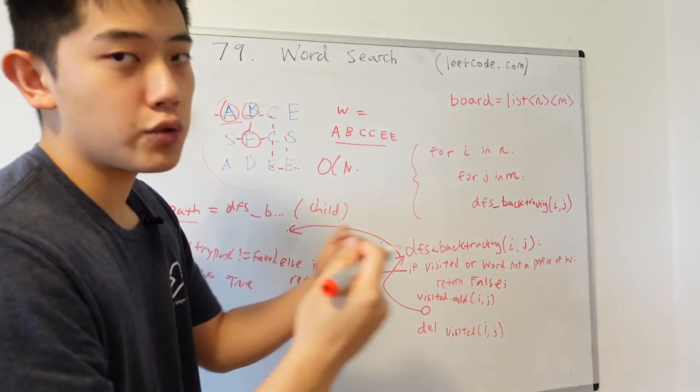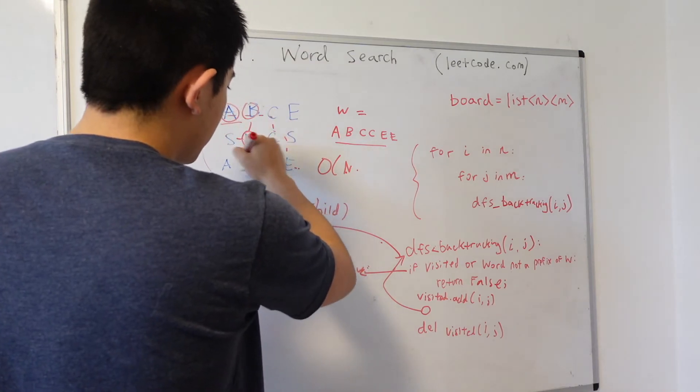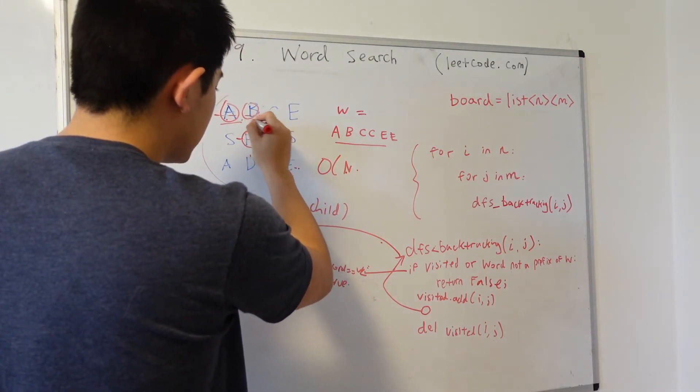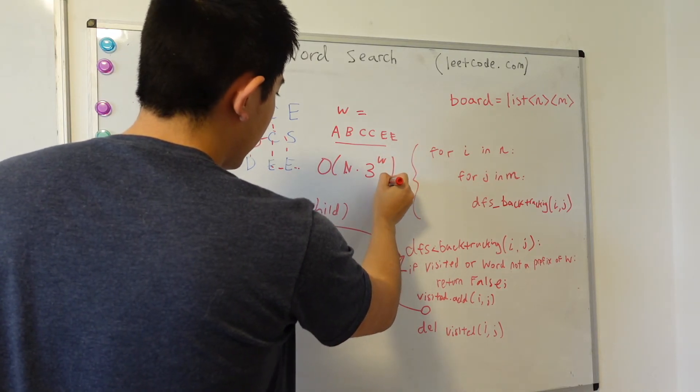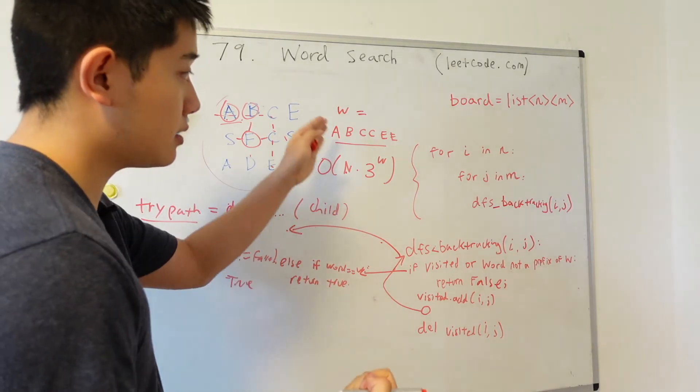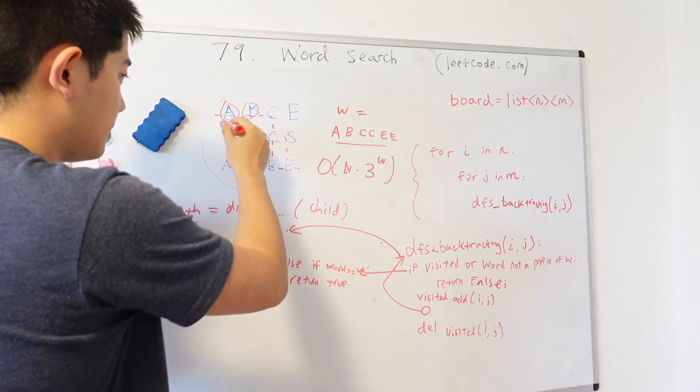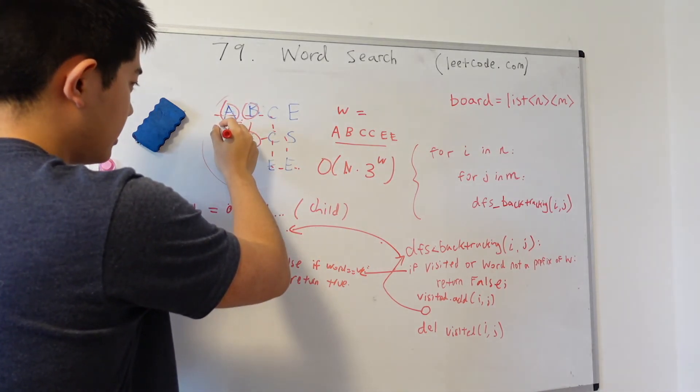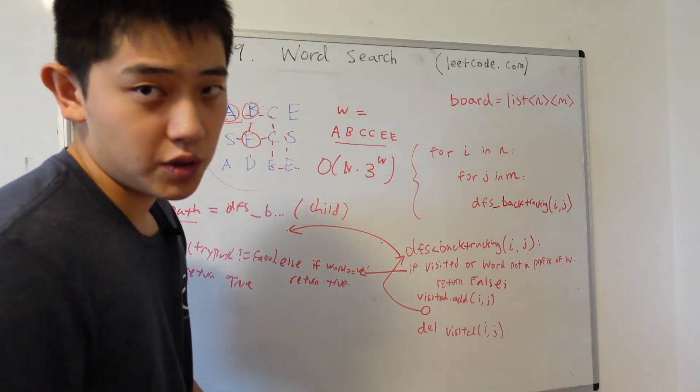And so really the number of choices boils down to three. So we instead have a three-ary tree. So the time complexity is big O of n, the number of items in our board, times three to the power of W. And W is the length of the word that we're searching for because at most our path could be only as long as W. And also the number of choices we would have to explore at most would be three to the power of W.